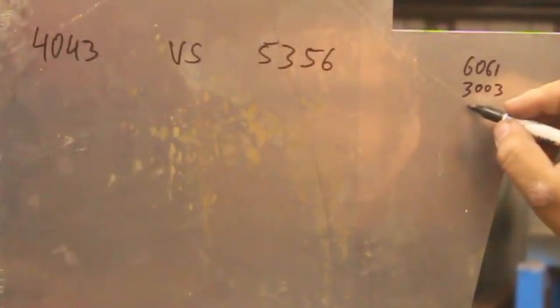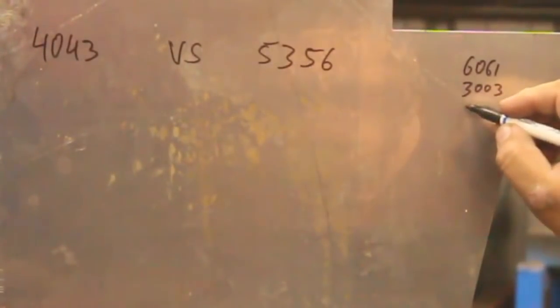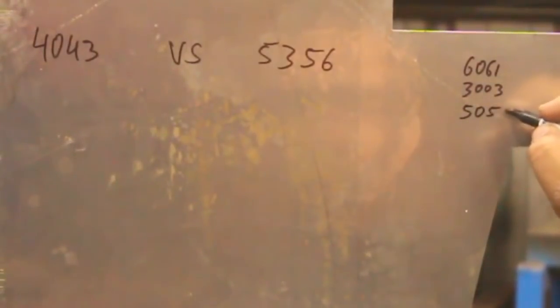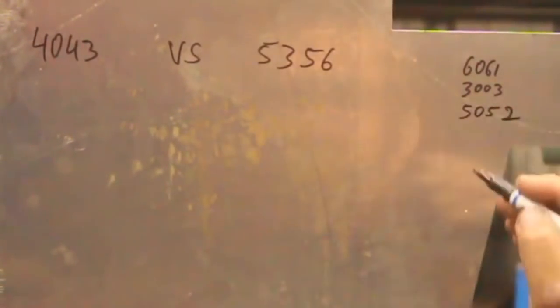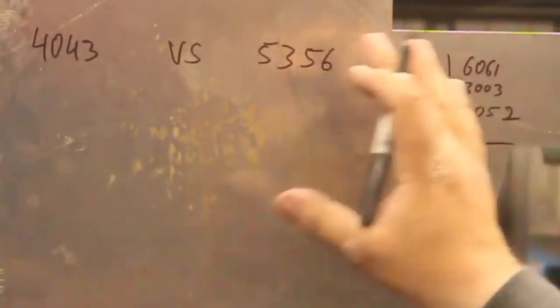On 5000 series, you want to use a 5000 wire. The only exception is the 5052 plate that can be welded with either or, and that's the most common for general fabrication out of that family.